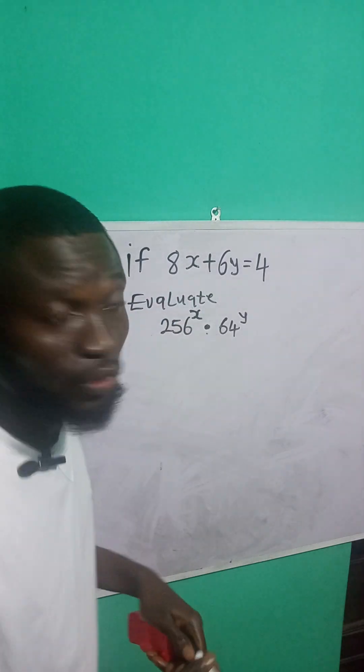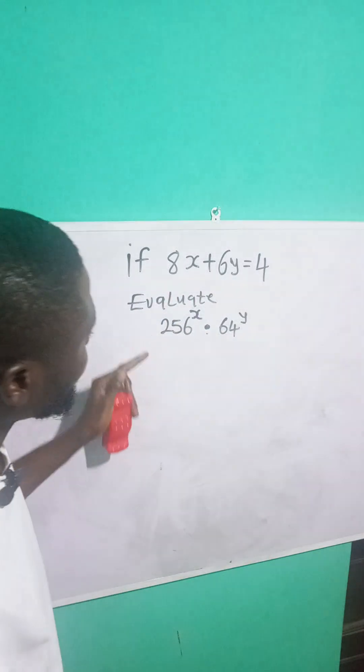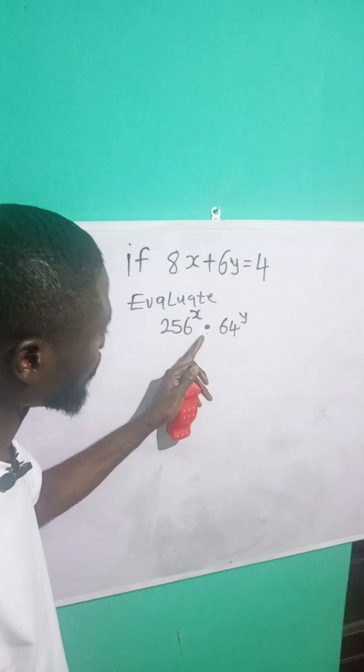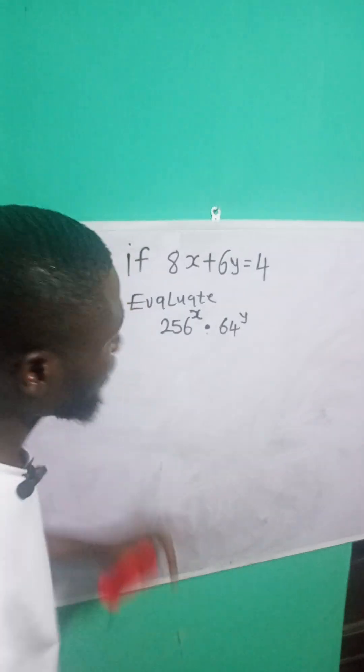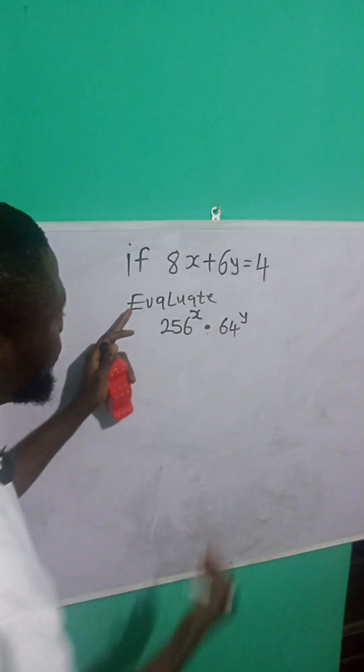So if 8x plus 6y is equal to 4, evaluate 256 raised to power x multiplied by 64 raised to power y. Let's just ignore this and focus on here.